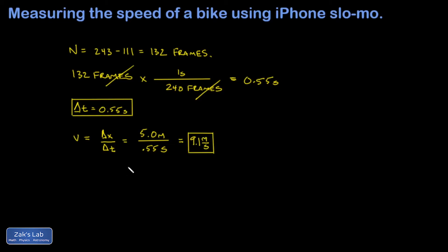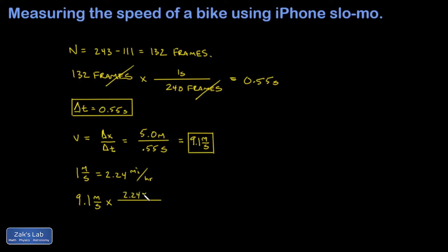Finally, I'd like to look at my speed in miles per hour since that's the reference I'm used to. Using the conversion factor of one meter per second equals 2.24 miles per hour, I take my 9.1 meters per second and multiply by 2.24 miles per hour per one meter per second. The meters per second cancel out, giving me about 20.4 miles per hour. Rounding to two significant digits, I'll call it 20 miles per hour.